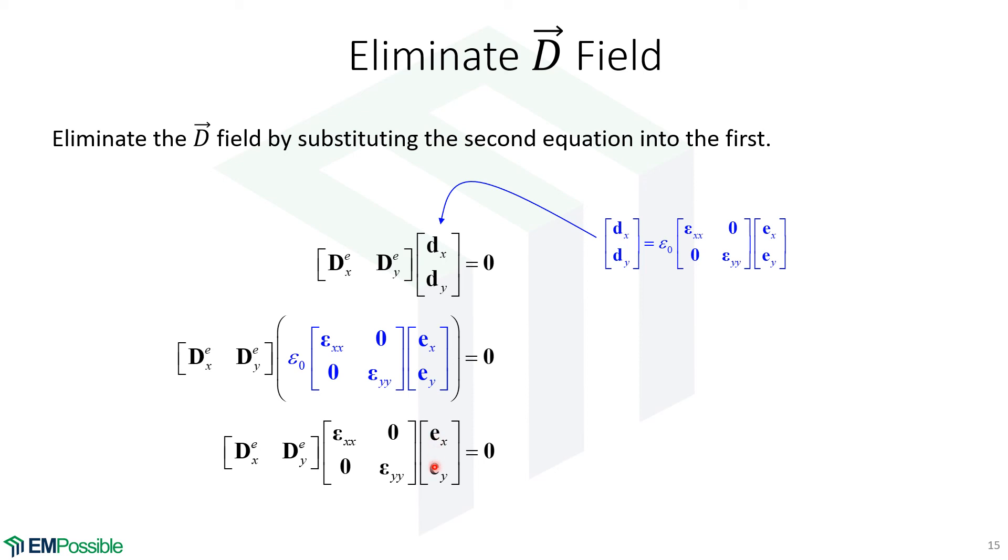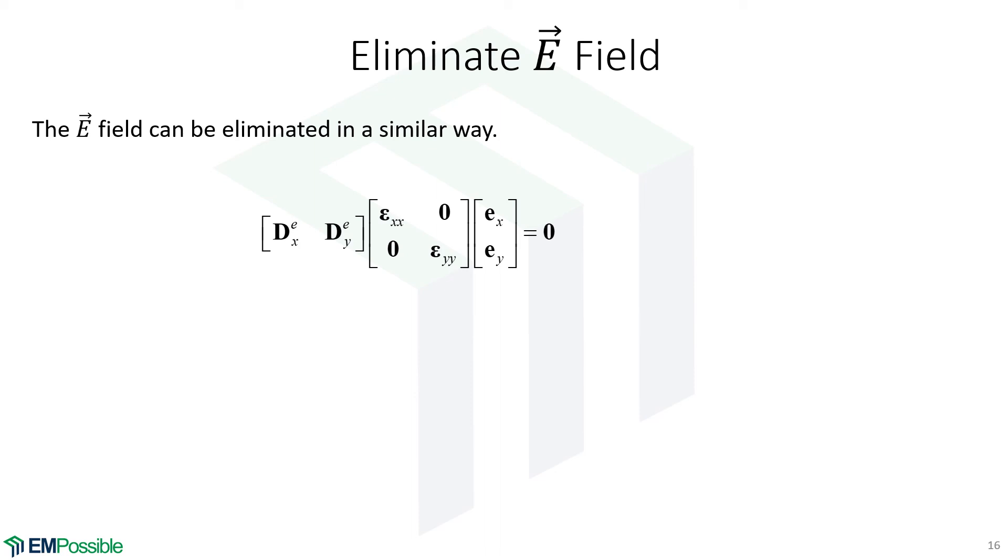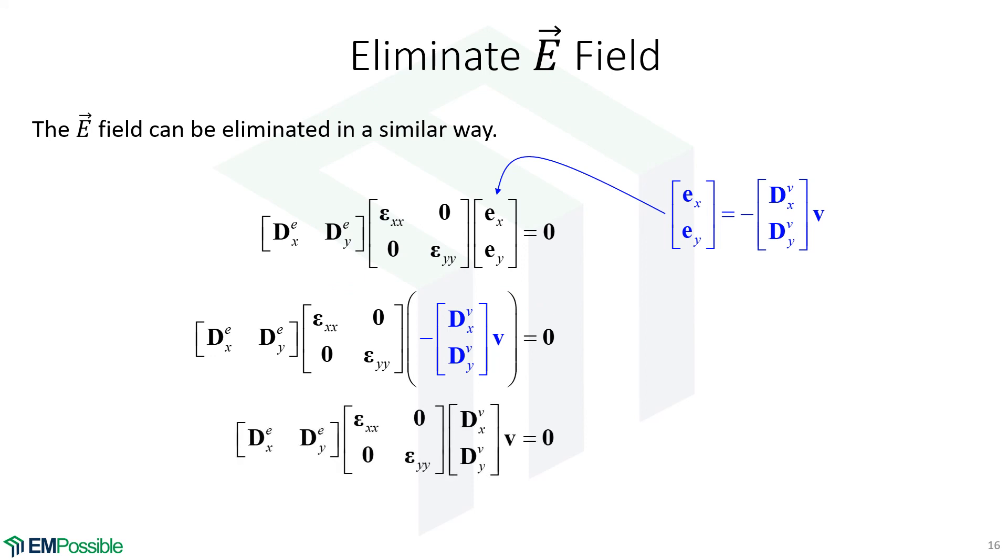One more step before we're at the final matrix equation. This is where we were from the last slide. We have a single matrix equation in terms of the electric field. But remember, the electric field is the negative gradient of the electric potential. So we can replace the electric field in this equation with this expression in terms of the electric potential. We throw that in, we can get rid of the negative sign because that's a constant. We can bring it to the outside, multiply both sides by negative one, and the negative sign just disappears. And that is the absolute final form. That is the inhomogeneous Laplace's equation in matrix form. This is the one that we will solve to calculate the electric potential.